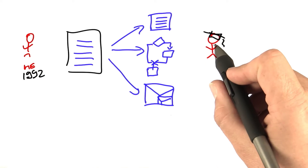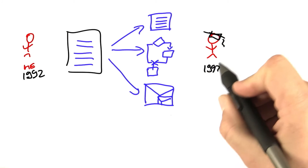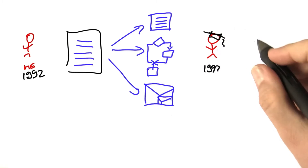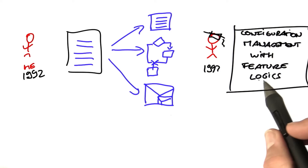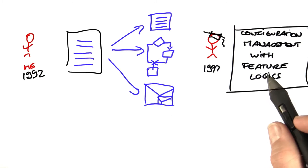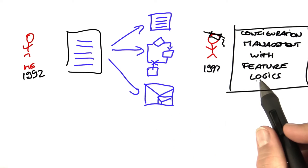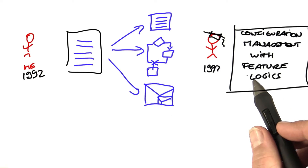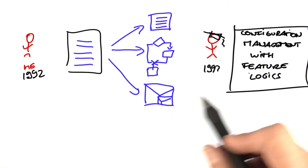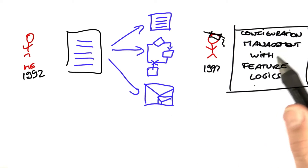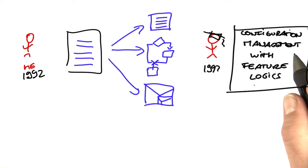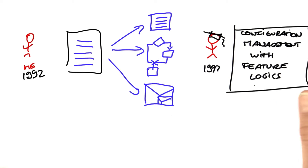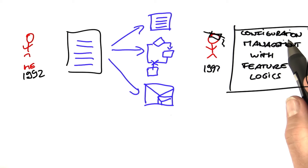Later, I went on pursuing my PhD, which I completed in 1997 on a topic named configuration management with feature logic. The idea was to use description logic to model changes and variants and to detect inconsistencies. This was pretty cool, but the problem was that apparently no developer was willing to learn description logics, and configuration management was essentially solved.